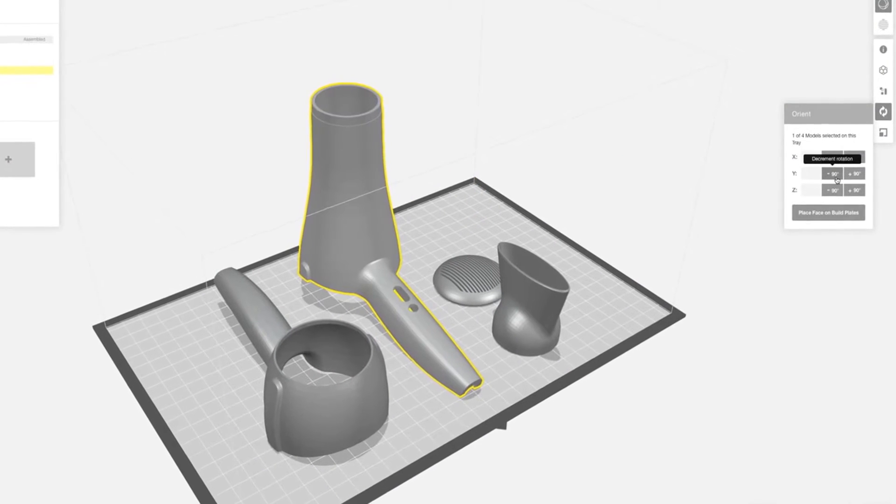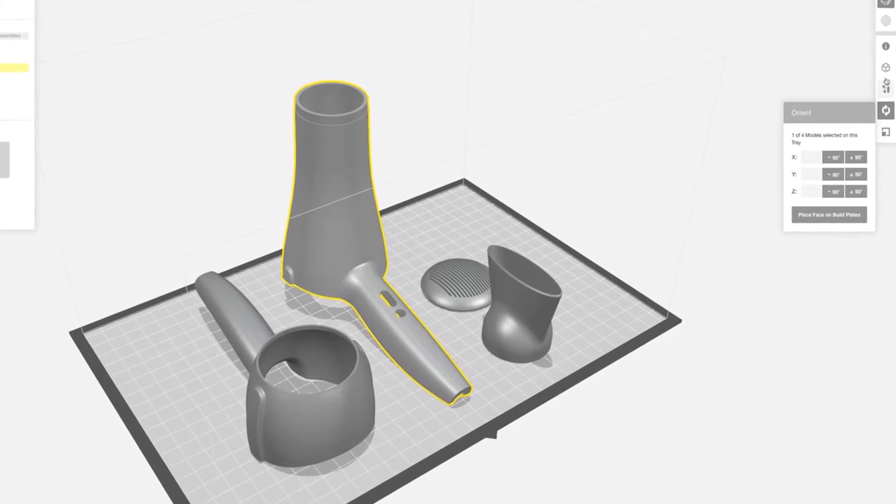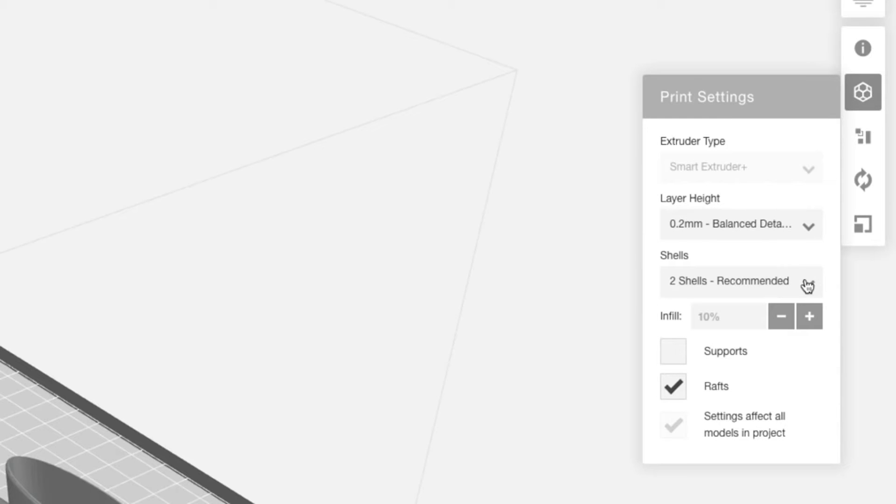When printing, you can select certain print settings to minimize work later on. We printed our model with standard settings of 0.2 millimeter layer height, 10% infill, and two shells.